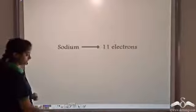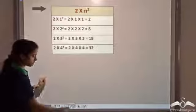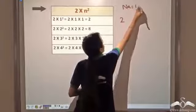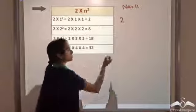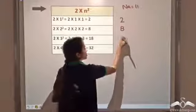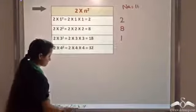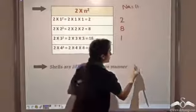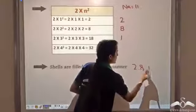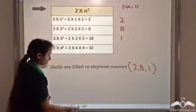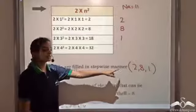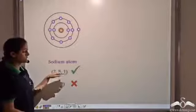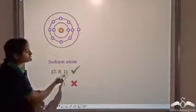For sodium, which has 11 electrons: the first shell takes 2 electrons, the second shell takes 8, and the remaining 1 electron goes to the third shell. By rule 2, the electrons occupy shells in a stepwise manner. We write: first shell, second shell, third shell, enclosed in brackets. The outermost shell has only 1 electron, so it obeys the third rule. The electronic configuration of sodium is 2, 8, 1 — not 2, 9 — because we must follow the 2n² rule.